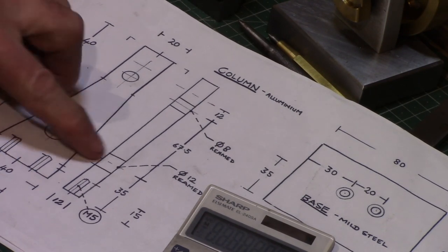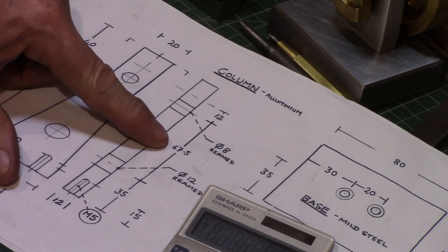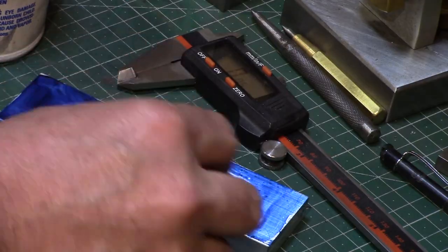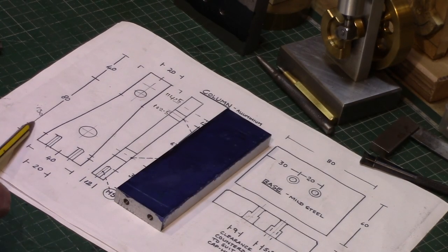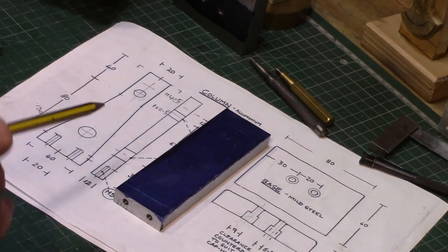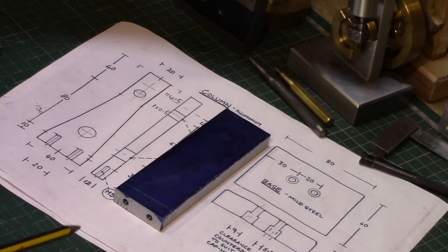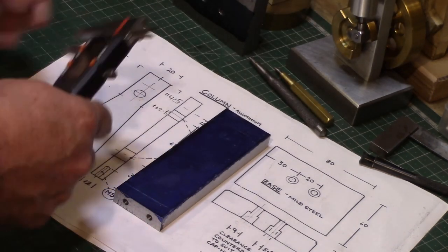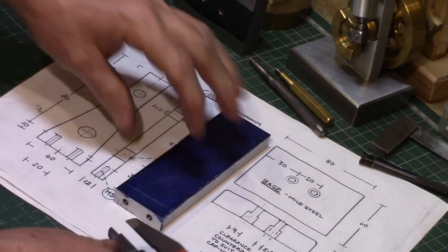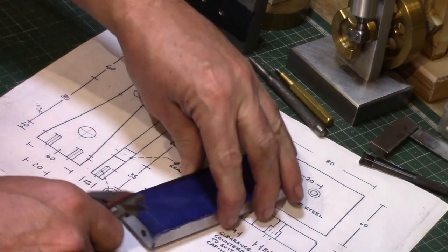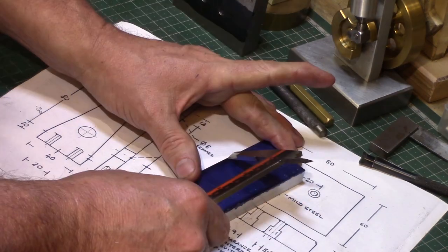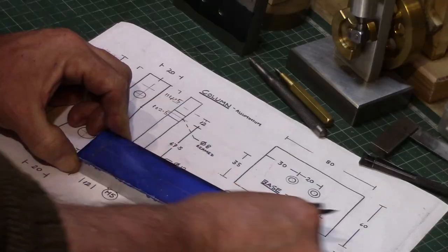We need to start marking out all the dimensions from the drawing onto the column. Our first mark is 10mm from the base, where the shoulder of the chassis taper is formed. And then scribe all the positions for the bearing holes and the outer shape of the column.